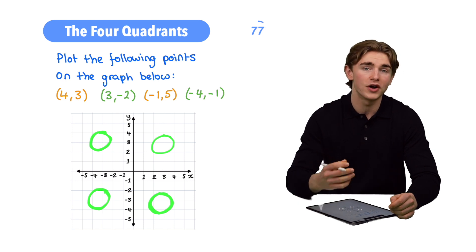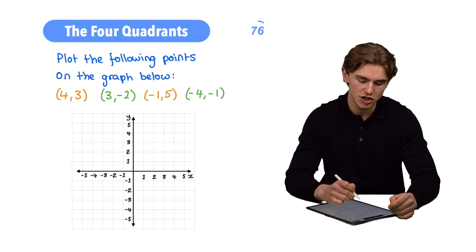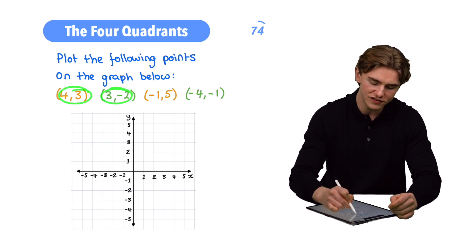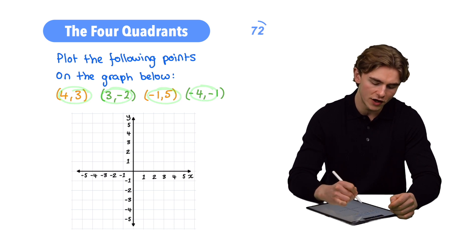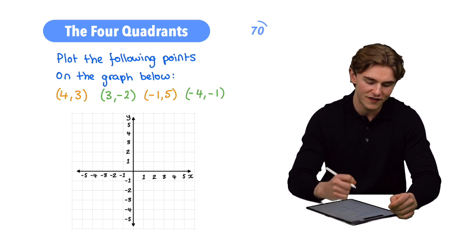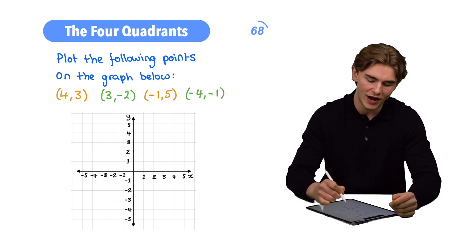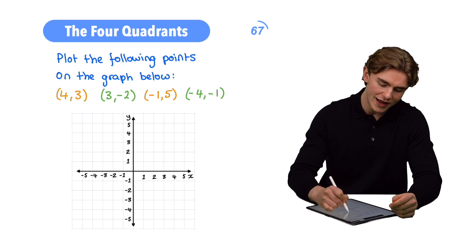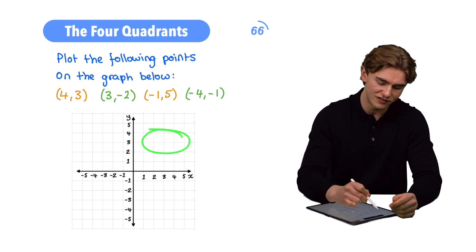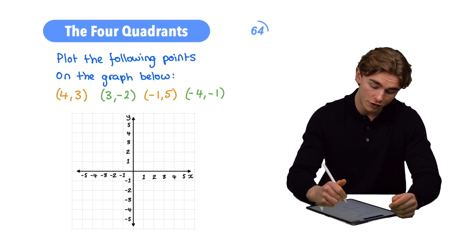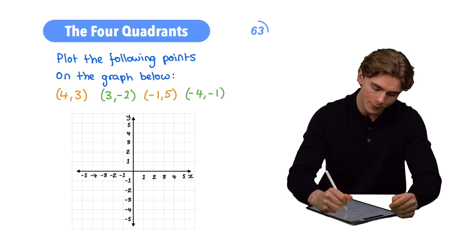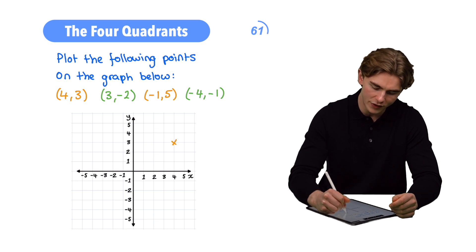How can we use that information to plot these four points? First, plotting the coordinate (4, 3): we have a positive value of x and a positive value of y, so this is going to go in the positive-positive quadrant. We go along the corridor to 4 and up the stairs to 3 — we have the point (4, 3).